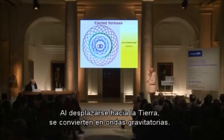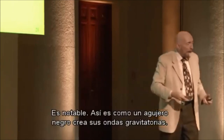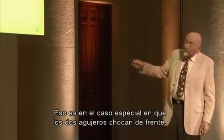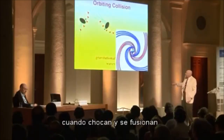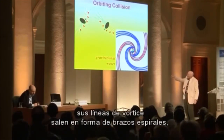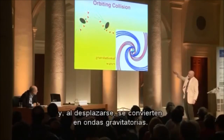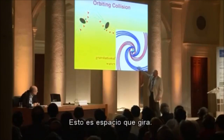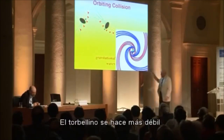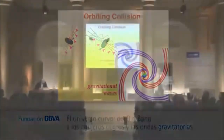These toroidal vortices travel outward toward Earth and become gravitational waves. It's rather remarkable — this is how a black hole makes its gravitational waves. That's the special head-on case. If the black holes are orbiting around each other, when they collide and merge their vortex lines reach out in spiral arms like the spiral arms of a galaxy, traveling outward as gravitational waves. The whirling becomes weaker farther away from the black hole, but this becomes the gravitational waves we are seeking to detect on Earth.